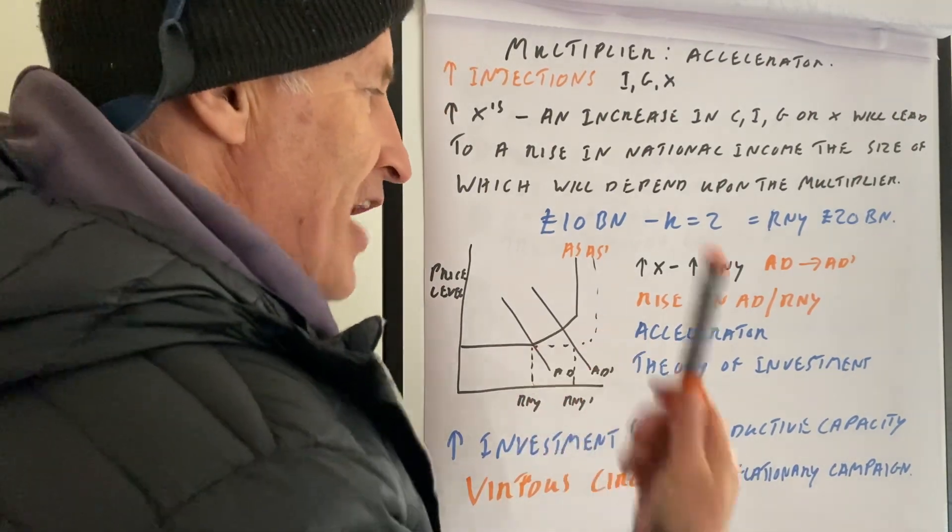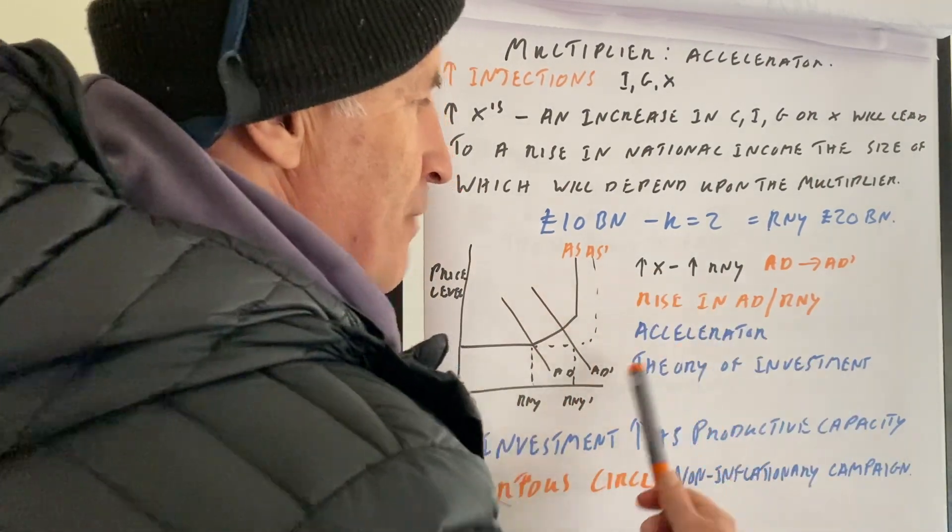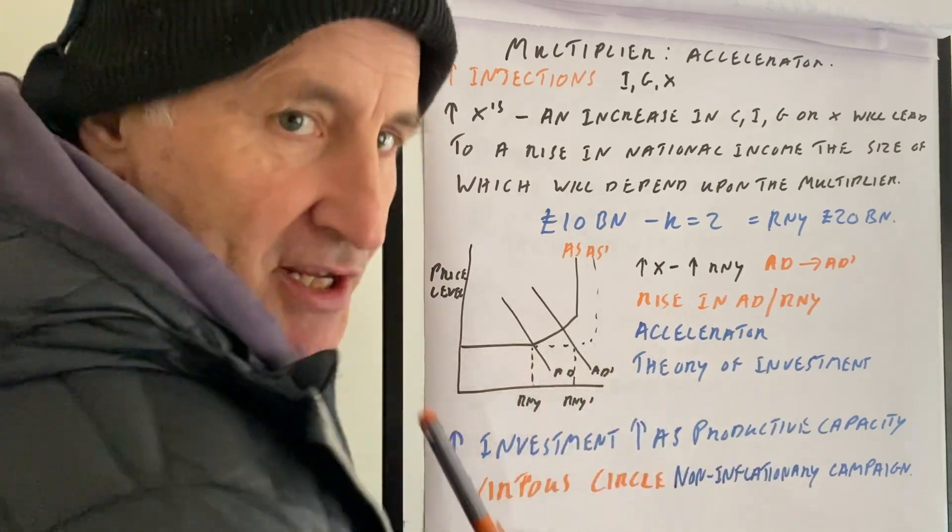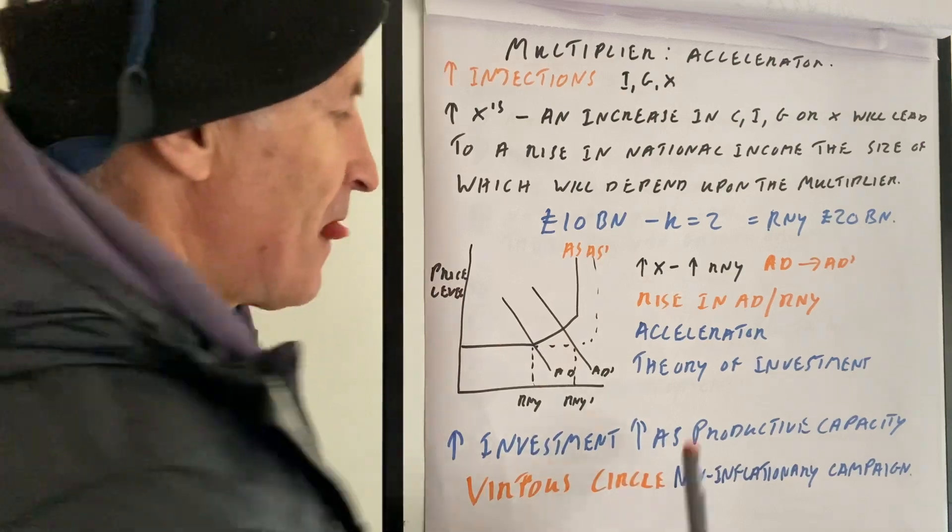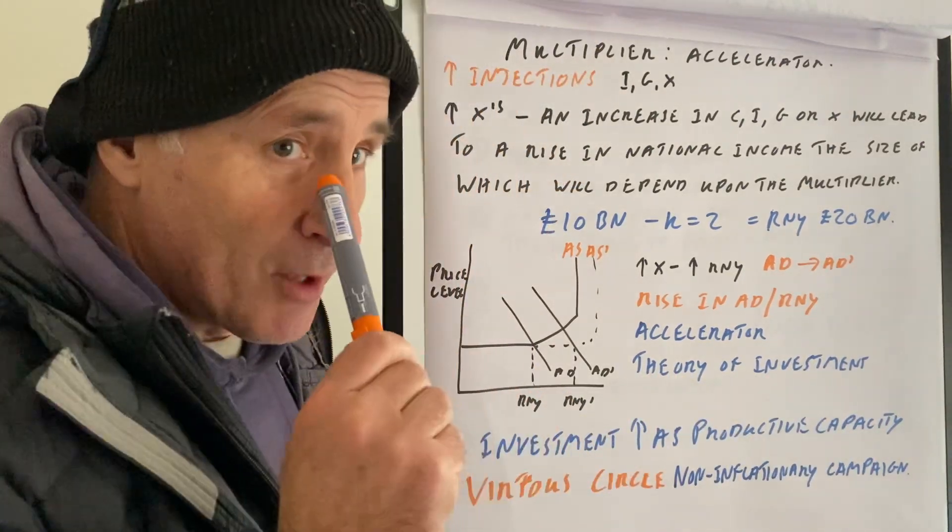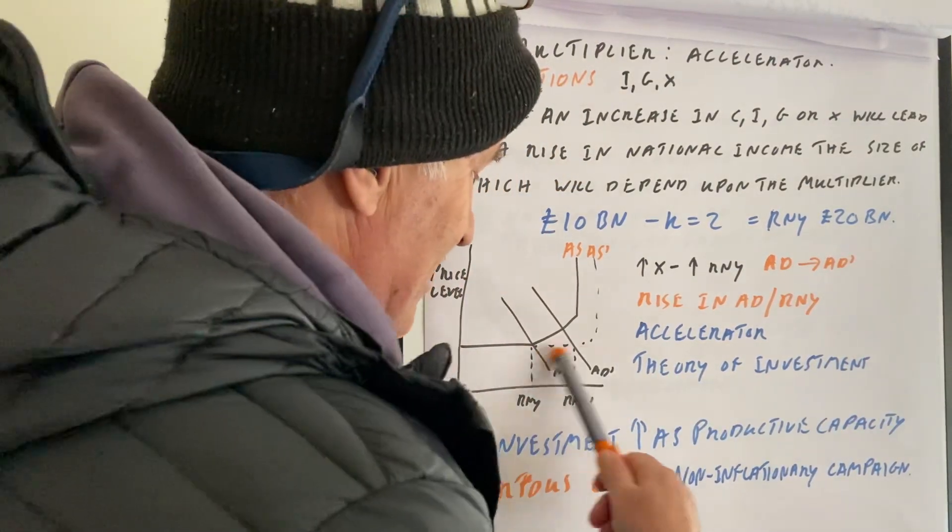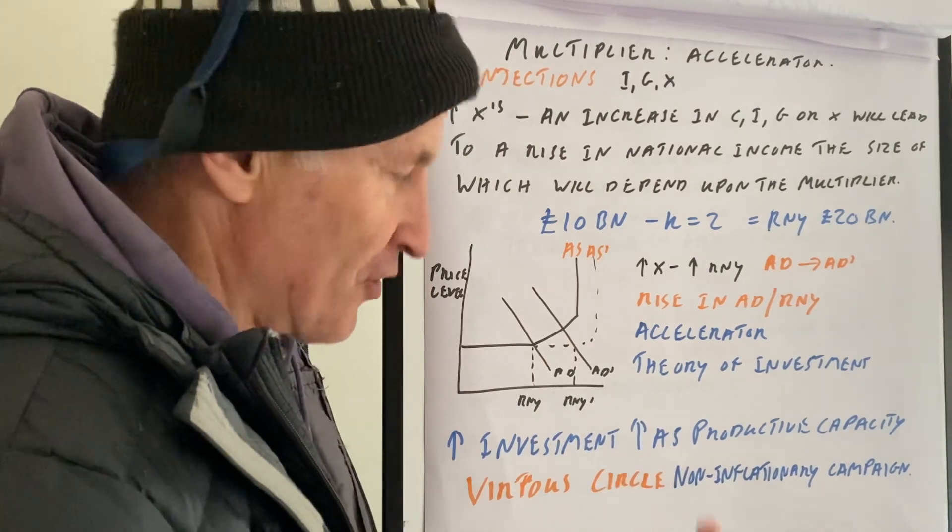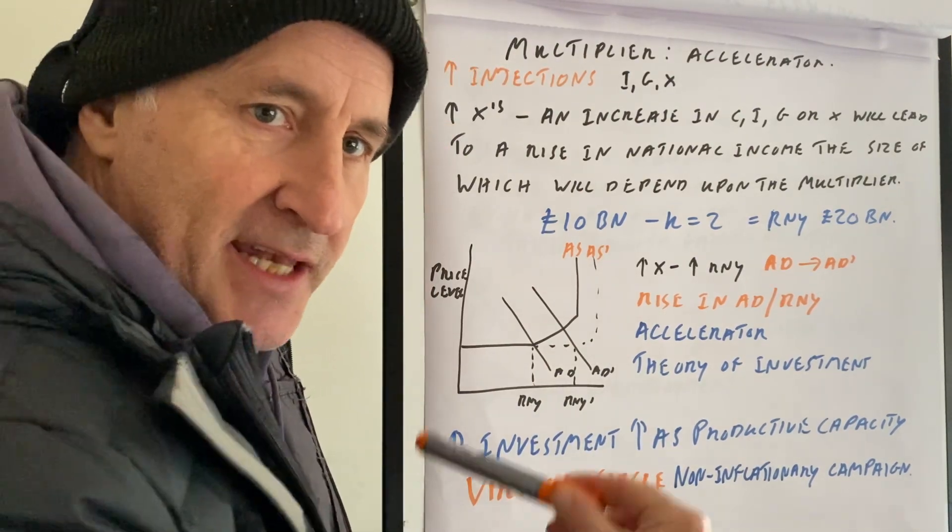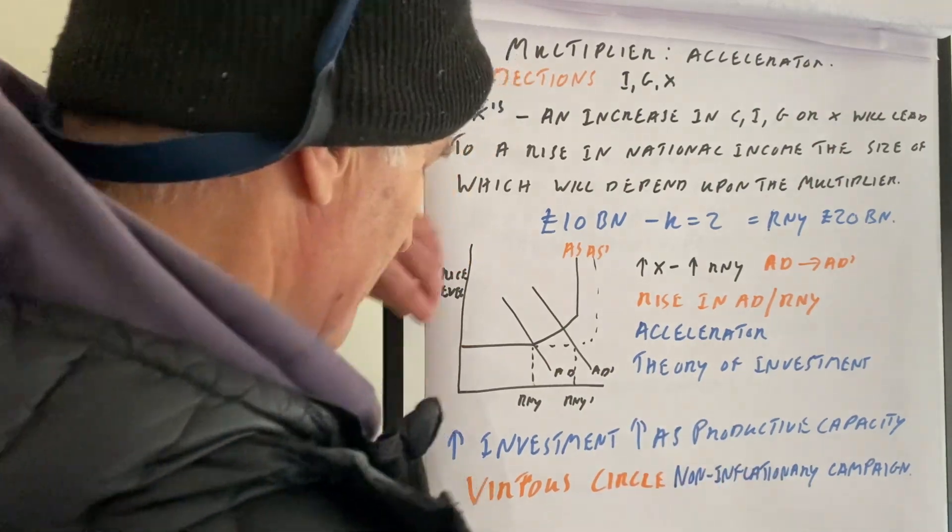But also, if we then get the rise in AD, it may also then lead to a rise in investment. This is called the accelerator effect. The accelerator is a theory of investment which basically says when AD goes up, then that will put an emphasis on firms to increase their investment in quite a strong linkage.